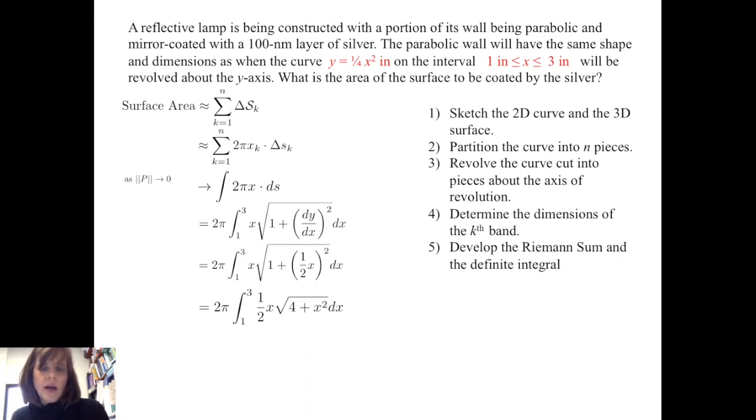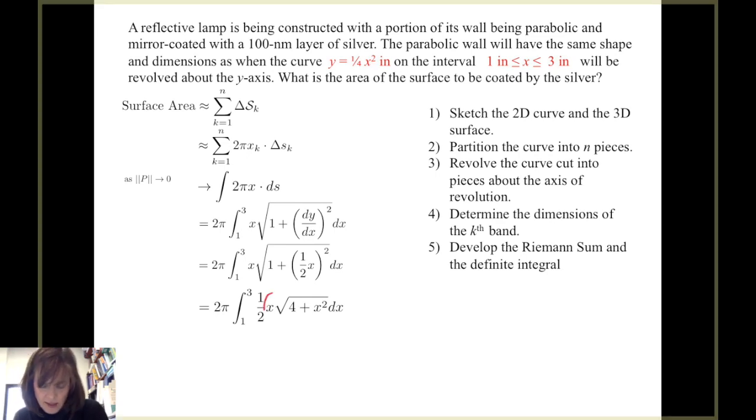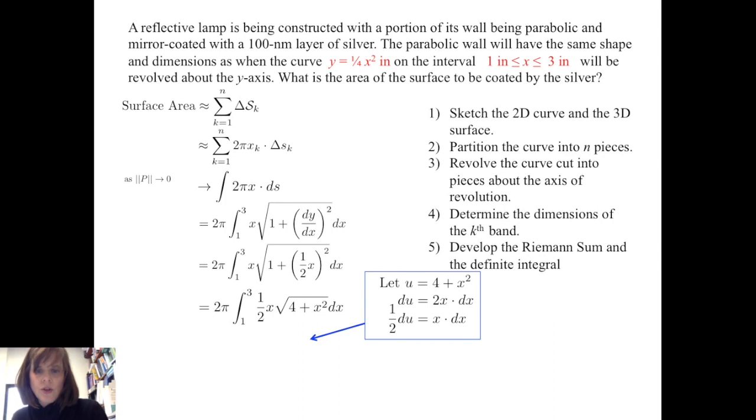Proceeding with some algebra, I find a common denominator under the square root. I pull out the square root of 1 fourth to get 1 half. And I look at that integral and I see that x is close to the derivative of what's under the radical. So I'm going to do a u substitution where u equals 4 plus x squared. The derivative of u with respect to x is 2x. So solving for x dx, I make the substitution in the integral, and I get pi times the integral from 5 to 13 of 1 half times the square root of u du. I can integrate this now, and I get pi over 2 times 2 thirds u to the 3 halves power from 5 to 13. And I evaluate that and I get approximately 37.38 square inches for the surface area of the parabolic wall.